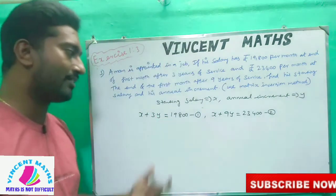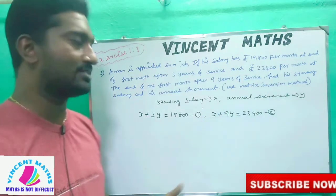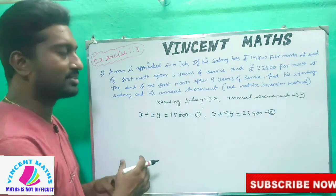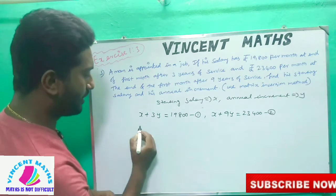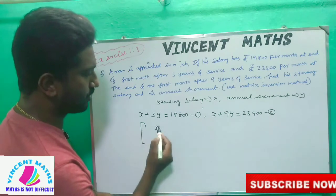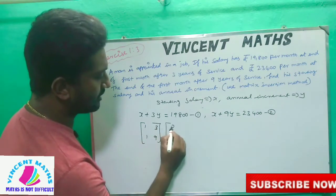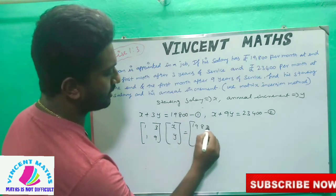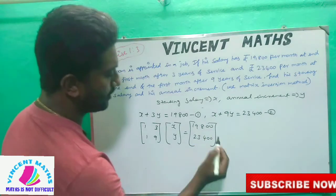Friends, it is very simple. Using the matrix inversion method, we set up the system of linear equations. The first equation forms the first row, the second equation forms the second row. X and Y are unknowns, and the B values are 19,800 and 23,400.